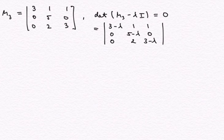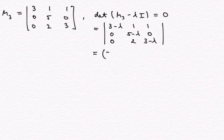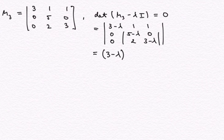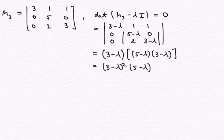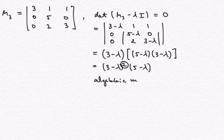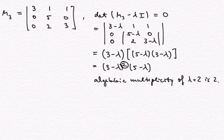I see right away that the first column only has one non-zero entry, so I'm going to expand the determinant along this column. I get (3 minus lambda) times the determinant of the submatrix from deleting the first row and first column, which is (5 minus lambda)(3 minus lambda) minus 2 times 0. This is already conveniently given in its decomposition into linear factors, and I see that eigenvalue lambda equal to 3 has algebraic multiplicity of 2 — a double root.